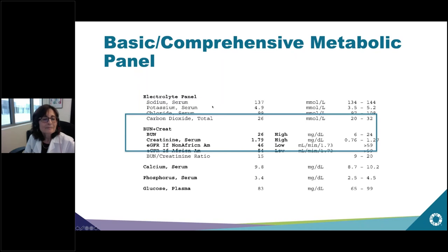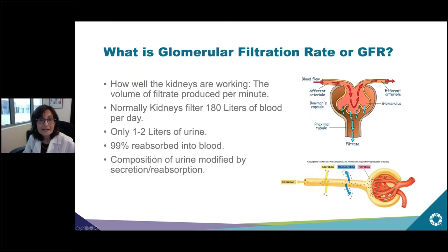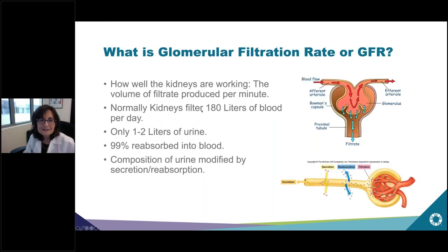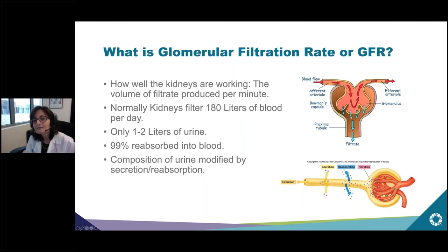The next part of the basic comprehensive metabolic panel is kidney function. Another value you'll see on your lab report is GFR — glomerular filtration rate. Basically, the GFR tells you how well your kidneys are working. The kidney filters all of the blood in your body, and normally filters 180 liters of blood per day. You only make about one to two liters of urine because the kidney reabsorbs 99 percent of that fluid back into the blood.